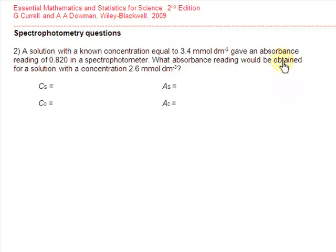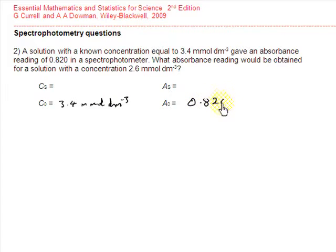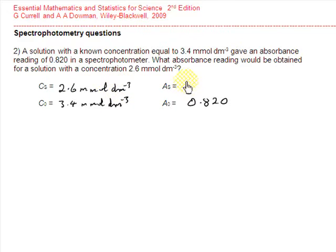In question 2, the concentration of the known solution is 3.4 millimoles per decimetre cubed, and its absorbance is 0.820. Another solution with a known concentration of 2.6 millimoles per decimetre cubed is put into the spectrophotometer, and we have to calculate the absorbance we would expect to see for this solution.